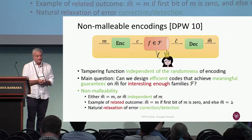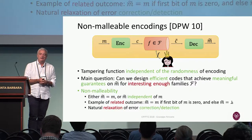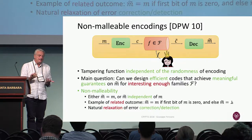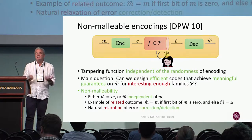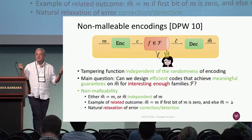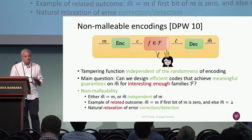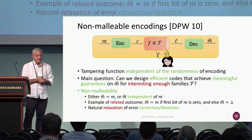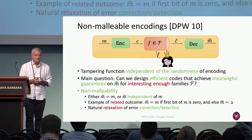We want to prevent the adversary from creating a codeword C-tilde for a related plaintext M-tilde. Non-malleability means that either M-tilde equals M — meaning F doesn't do anything — or M-tilde is independent of M, because the adversary can always just forget about C and encode a completely unrelated message. For example, if the first bit of M is zero, the adversary could leave it as-is, or produce an invalid codeword — that would be a success for the adversary.